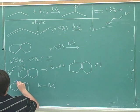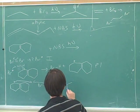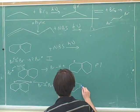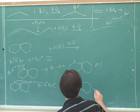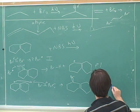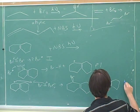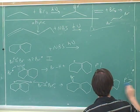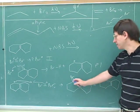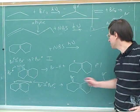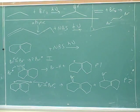Then we attack — the radical attacks another Br2. One thing you did well is showing the wedges and the dashes here. So we would expect one attack on a wedge and one attack on a dash. This is not meso, so these are two different products. But what's the one big thing I've left out so far? Resonance.